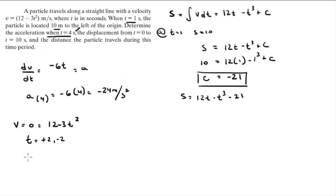Now, they're asking us for the displacement from 0 to 10. So we need s at 0, s at 2—negative 2 we don't really care because it's outside the range from 0 to 10—and we need s at 10.